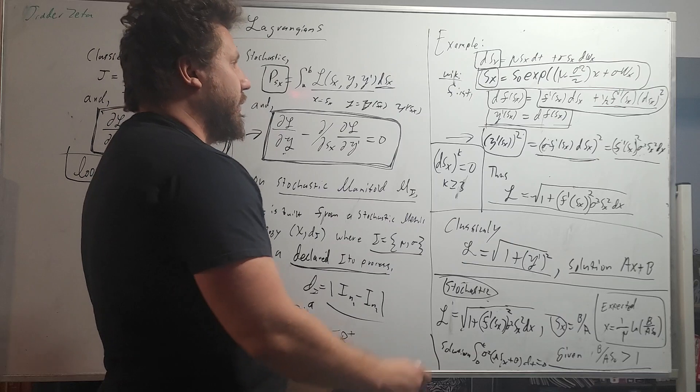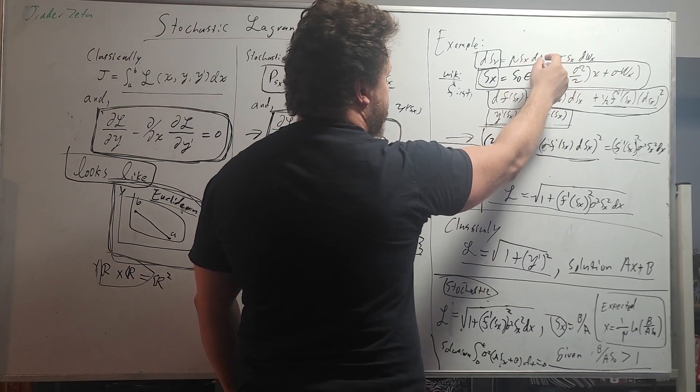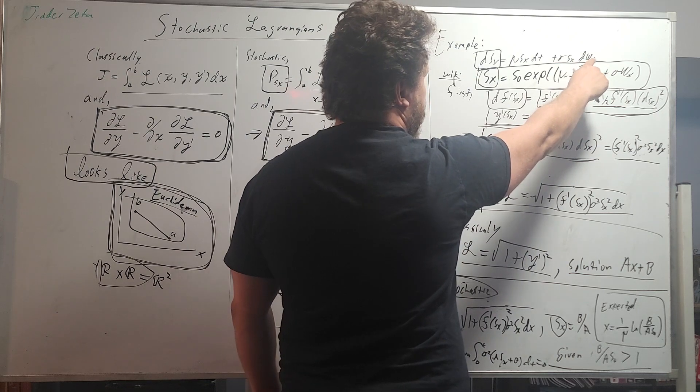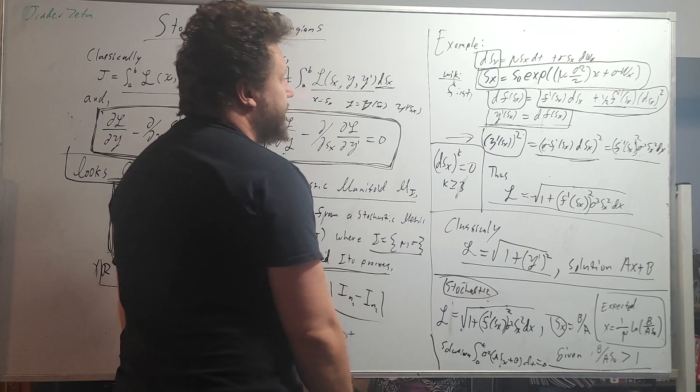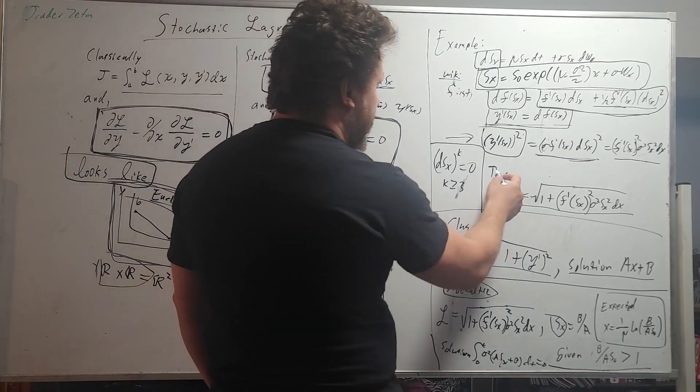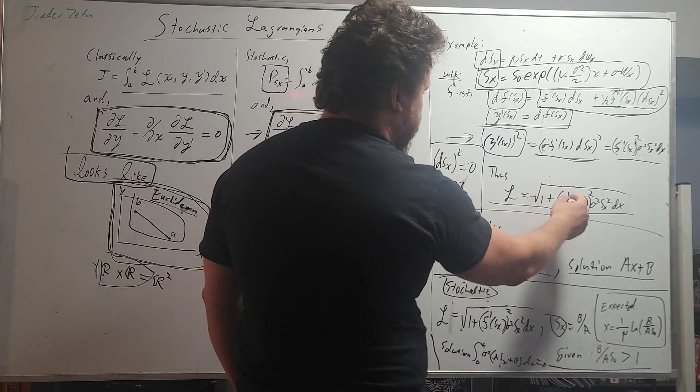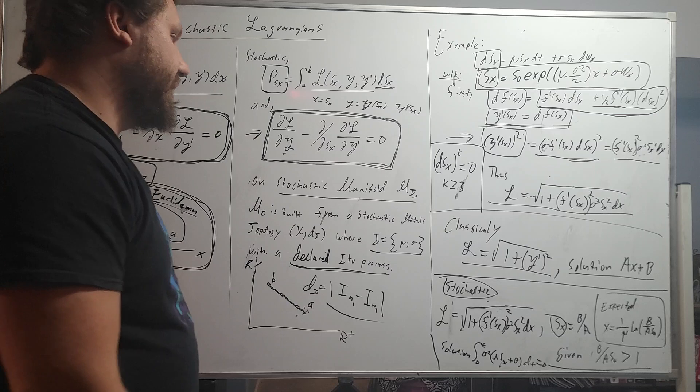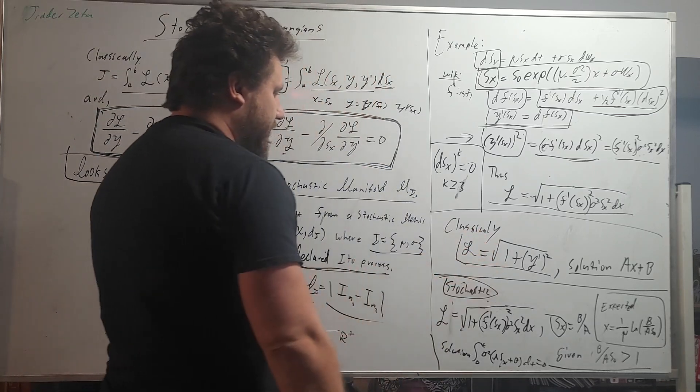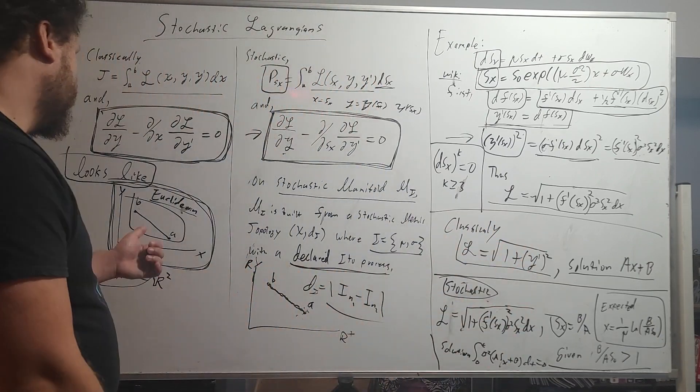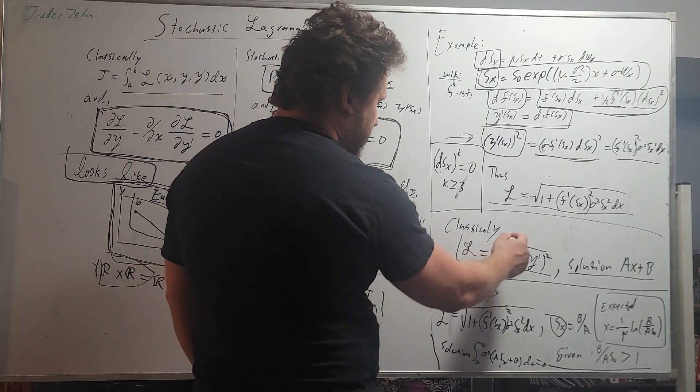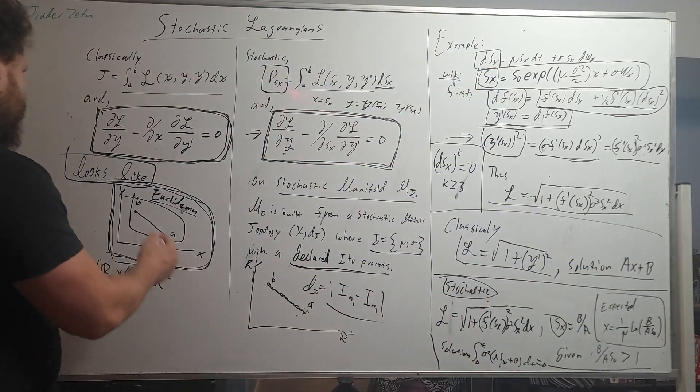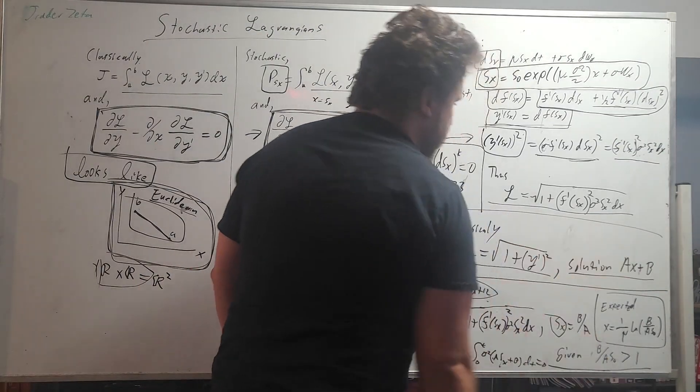And that's because when you multiply dt times dt, it's 0. When you multiply dW times dW, it becomes dt. That's in the stochastic calculus world. So thus, we're going to set our Lagrangian equal to square root 1 plus f prime of sx squared sigma squared sx squared dx. And that is very close to the classical Lagrangian for Euclidean dynamics: Lagrangian equals square root 1 plus y prime squared, and the solution is ax plus b. As you can see in Euclidean space, it's a line, and ax plus b is the equation of a line.